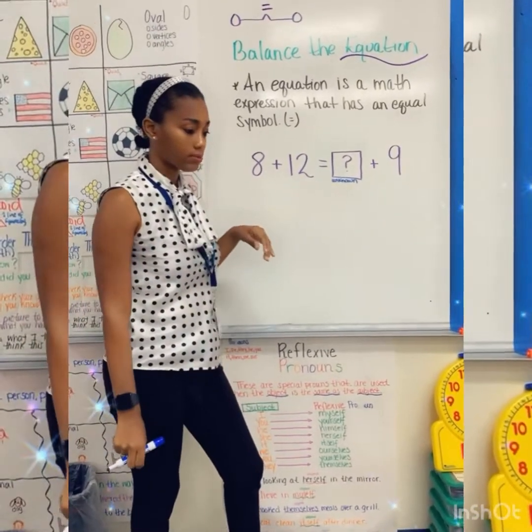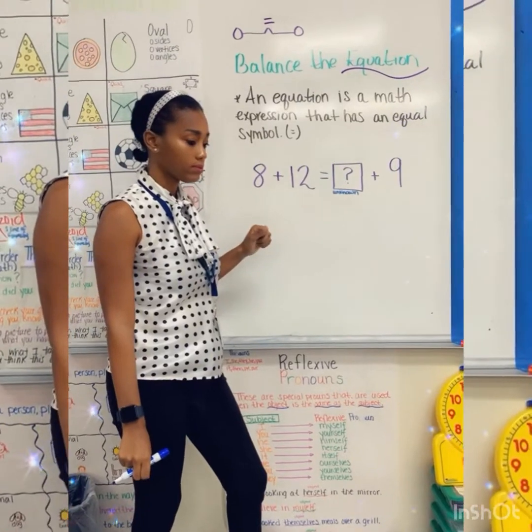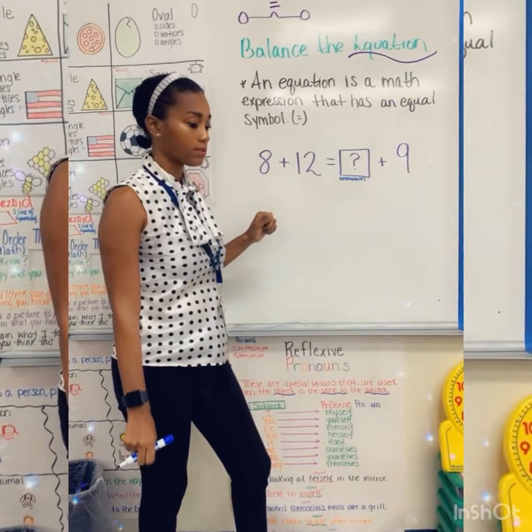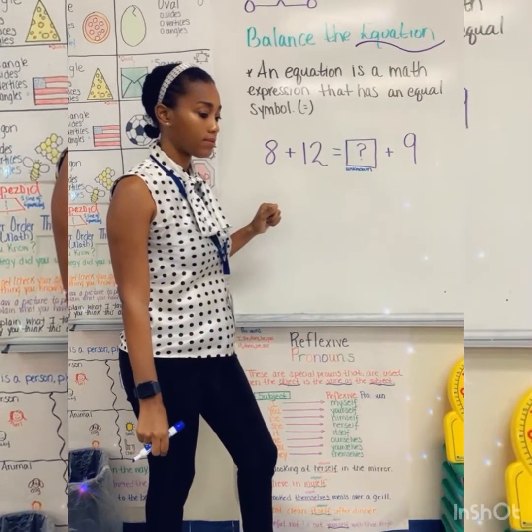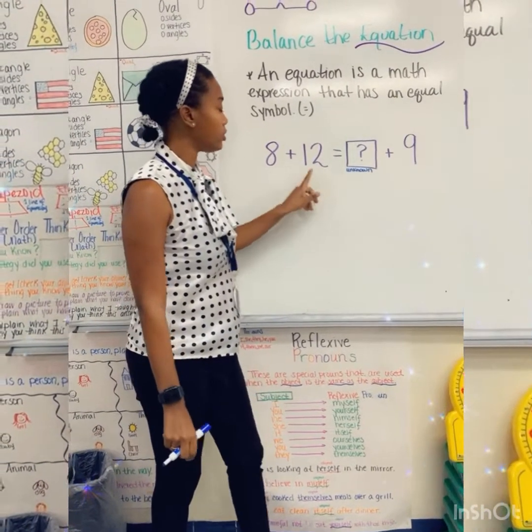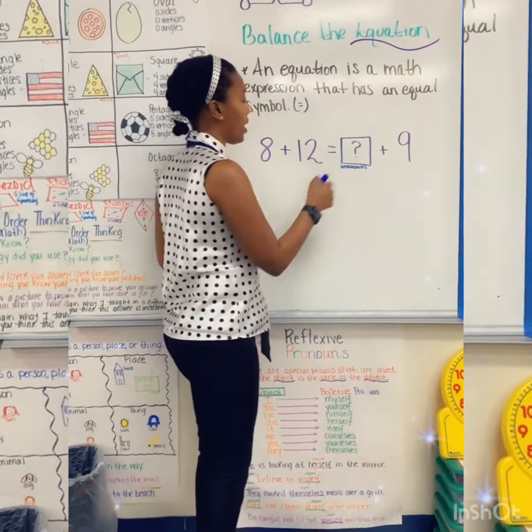You're going to start at 12 and do the count-on method, and then count on 8. So use the count-on method — start at 12 and go up 8.